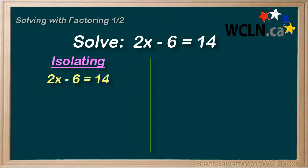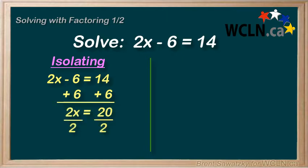To isolate the variable in this case, we would add 6 to both sides. And we're left with 2x equals 20. Then we can divide both sides by 2. And we have isolated the variable. That is, the variable x is by itself isolated. And on the right we have a 10. This is our solution.